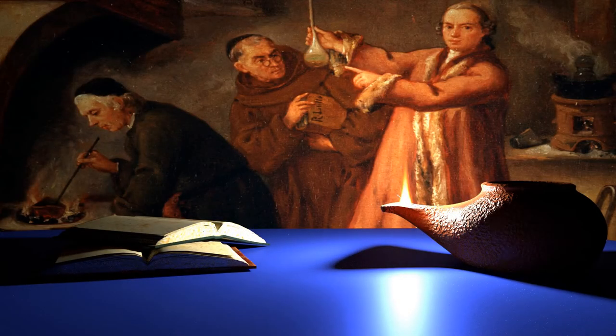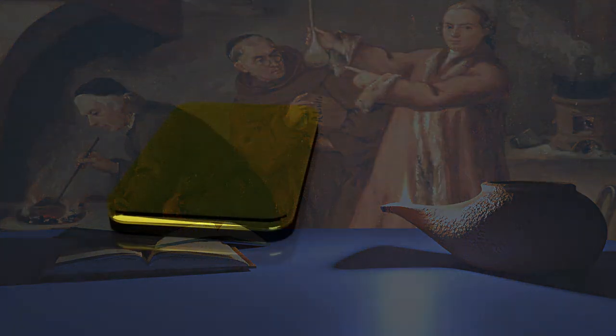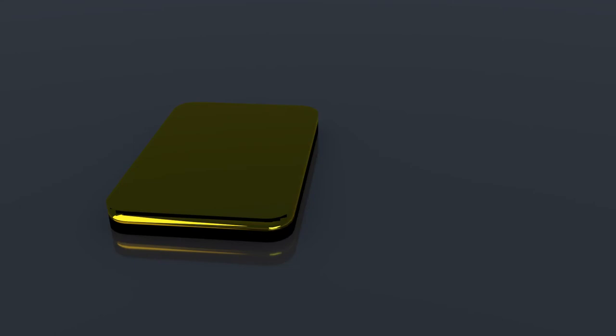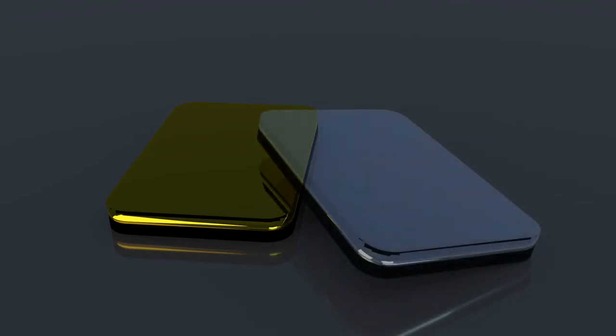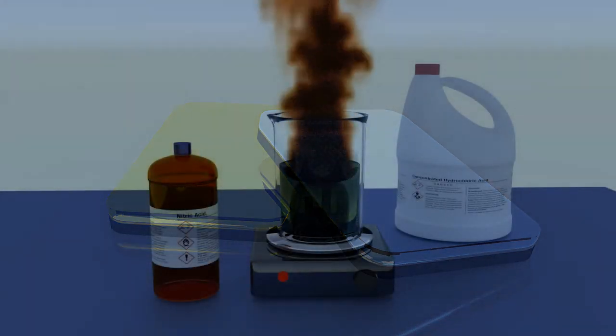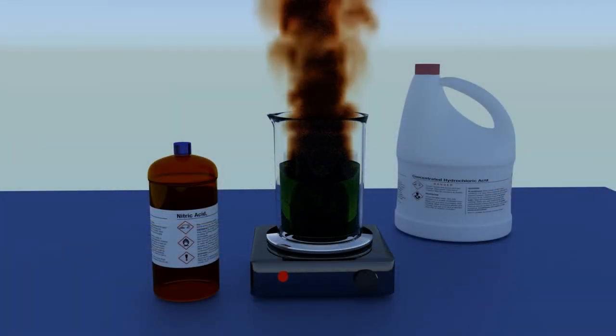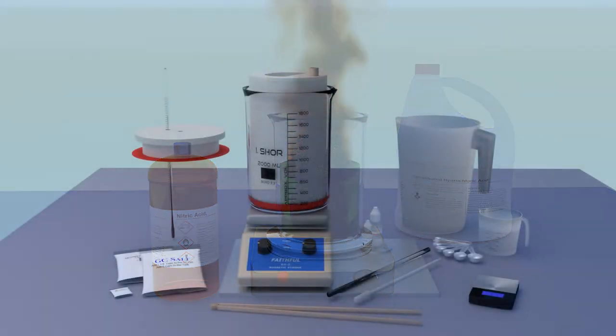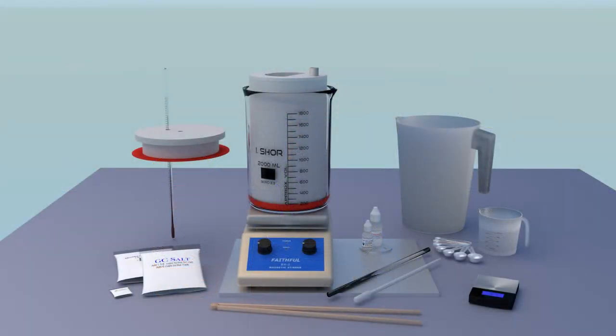Since ancient times, mankind has been refining precious metals - gold, and more recently, platinum group metals. For centuries, the refining has always been done with highly corrosive acids. Now however, you can refine your gold and platinum group metals to very high purity with the salt system refining process.